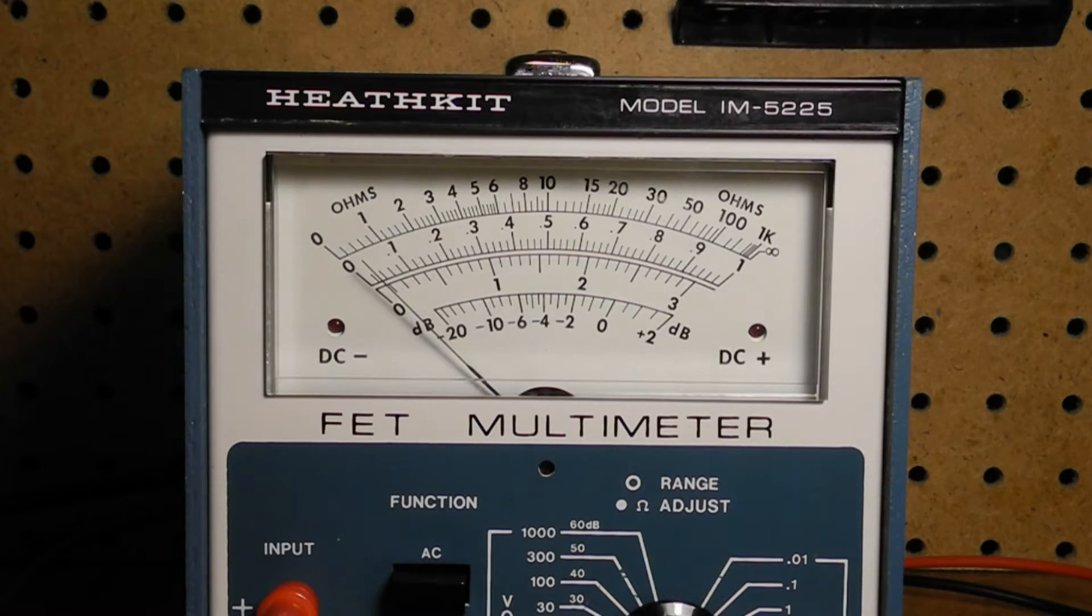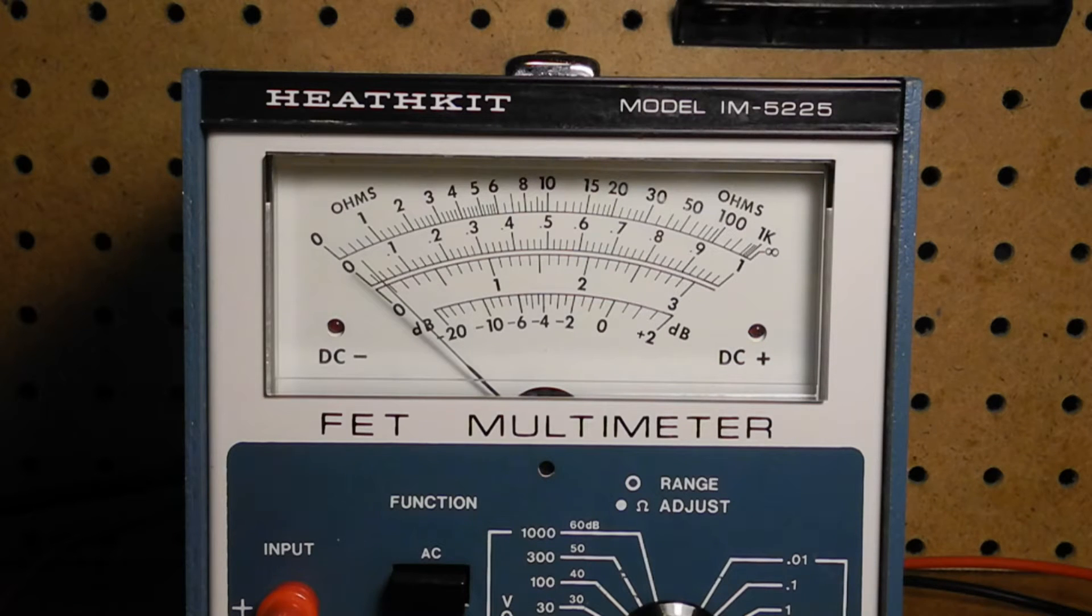DC current is supported over six ranges, 0 to 0.01, 0.1, 1, 10, 100, and 1000 milliamps full-scale. Accuracy is plus or minus 2% except for the 1000 milliamp range where it's 3%. AC current can also be measured using the same ranges as DC current where the accuracy is plus or minus 3% and 4% on the 1000 milliamp range. Frequency response is 10 Hz to 100 kHz going down to 50 kHz on the 100 and 1000 milliamp ranges.